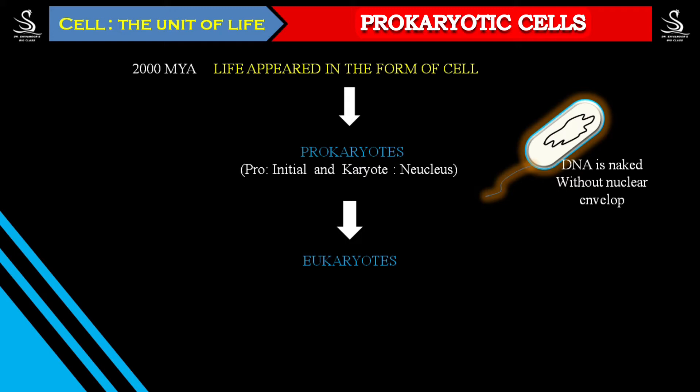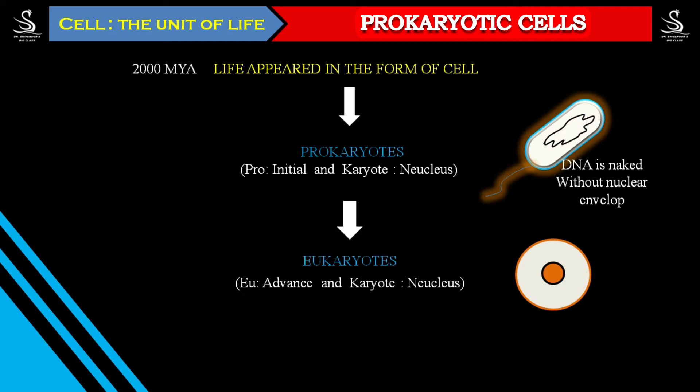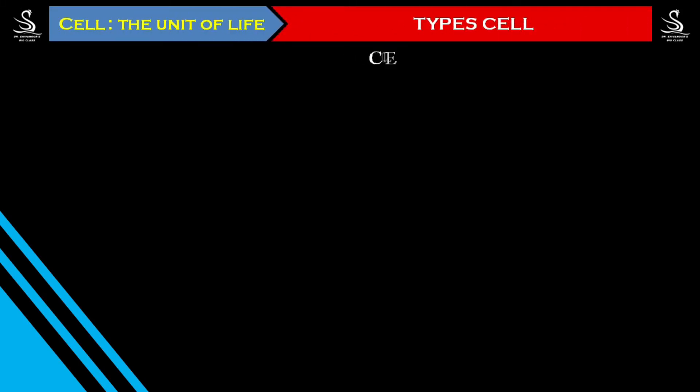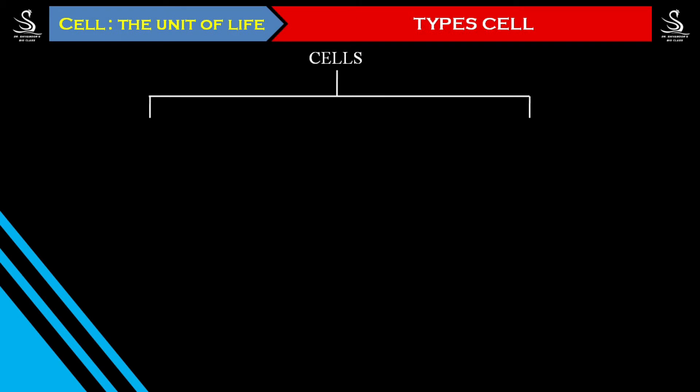Later on, a nuclear envelope developed surrounding the DNA, the DNA accumulated inside the nucleus, and those cells are called eukaryotic cells. 'Eu' means advanced, 'karyon' means nucleus — so eukaryotes are organisms with an advanced nucleus. We are also eukaryotes. Based on this we classify cells into two types: prokaryotic cells and eukaryotic cells.